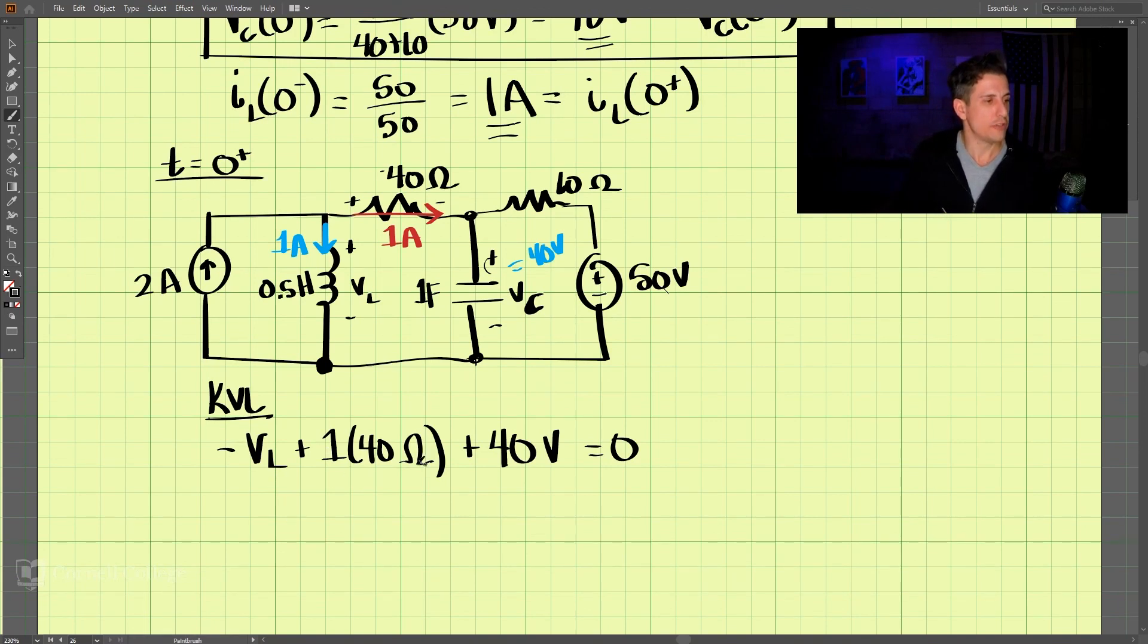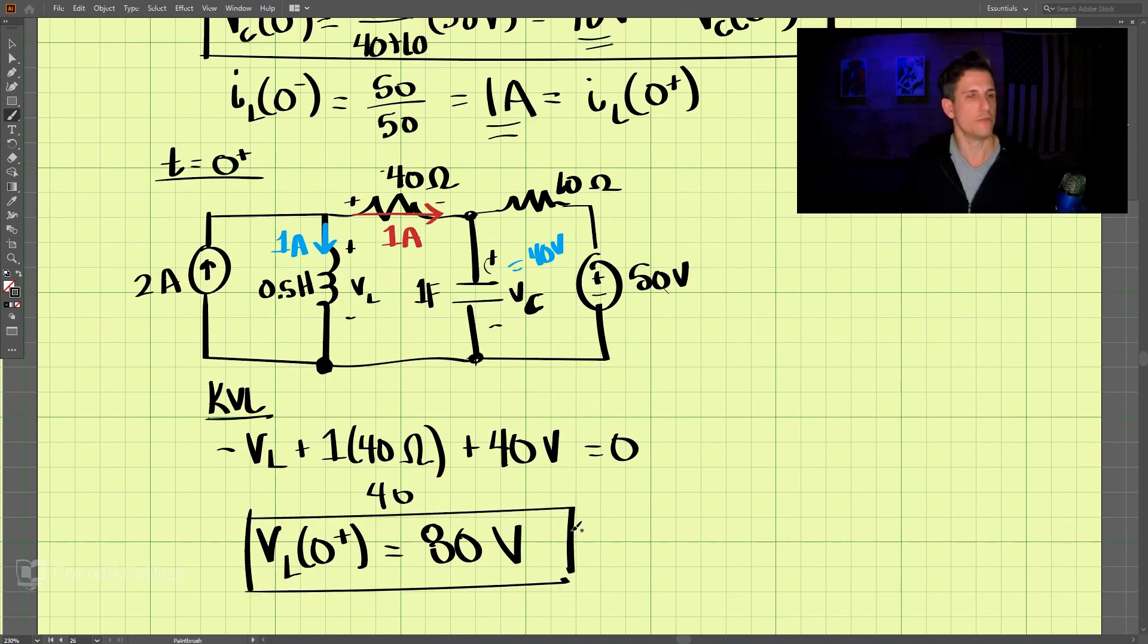So if we solve for this, this is 40, this is 40. So that comes out to be that VL at 0 plus equals 80 volts. And that is our answer to this problem.